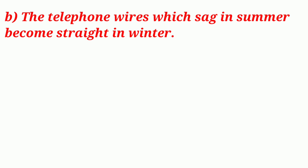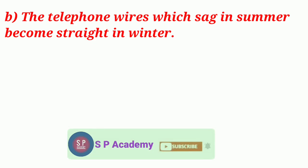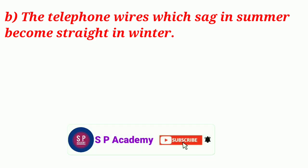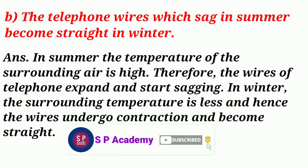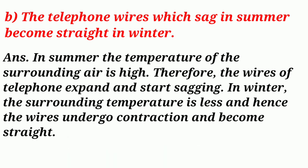Question B: The telephone wires which sagged in summer became straight in winter. Answer: In summer, the temperature of the surrounding air is high. Therefore, the wires of the telephone expand and start sagging. In winter, the surrounding temperature is less and hence the wires undergo contraction and become straight.